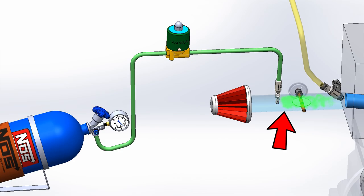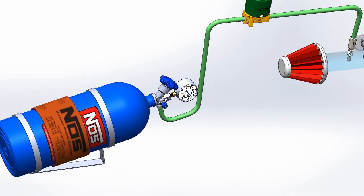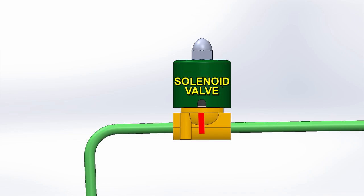In the event that the pressure rises too high due to a fault, the relief valve opens, releasing the nitrous to prevent the bottle from exploding. Continuing on the way of the nitrous, we then find the solenoid valve. This valve only opens when the button is pressed and closes when it is released.